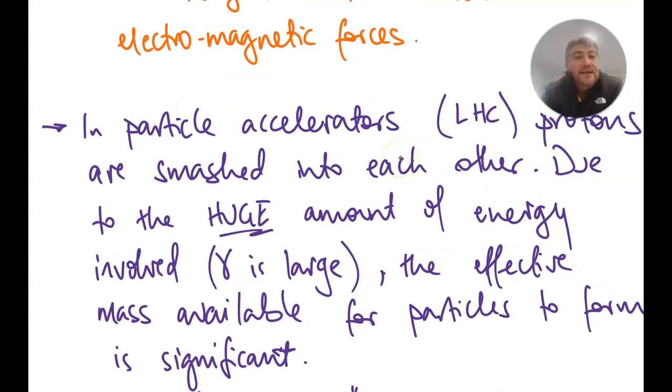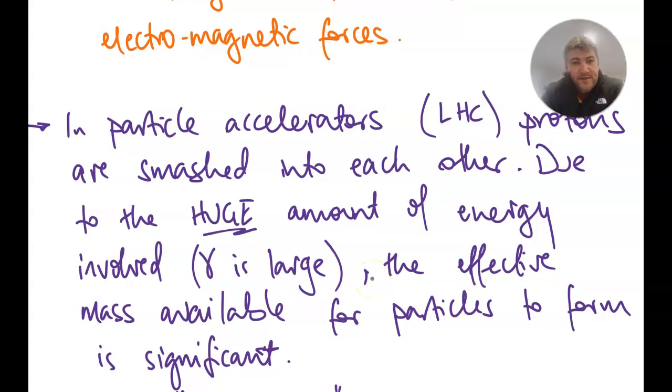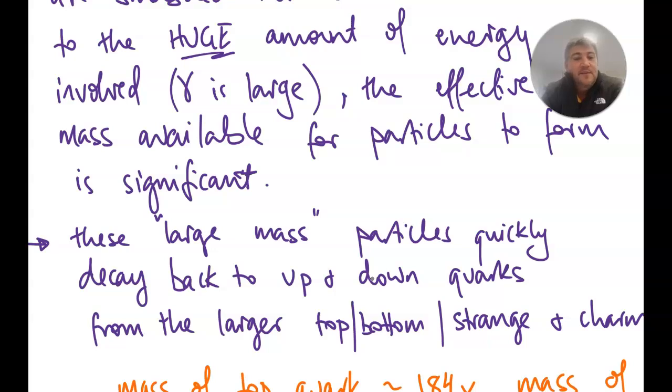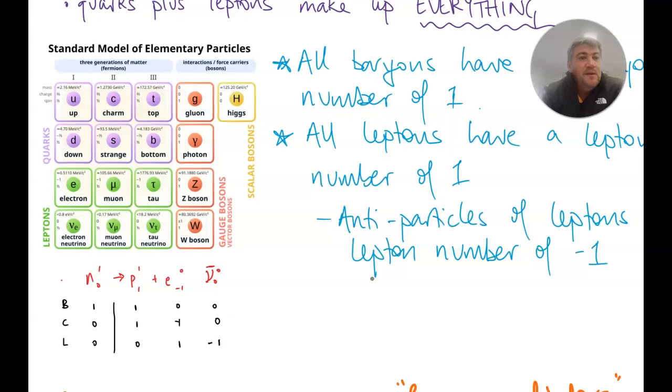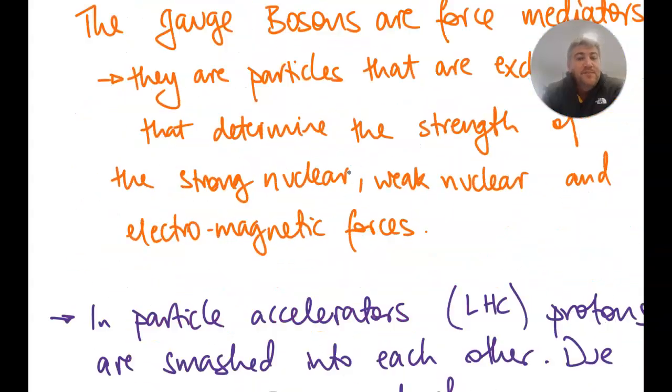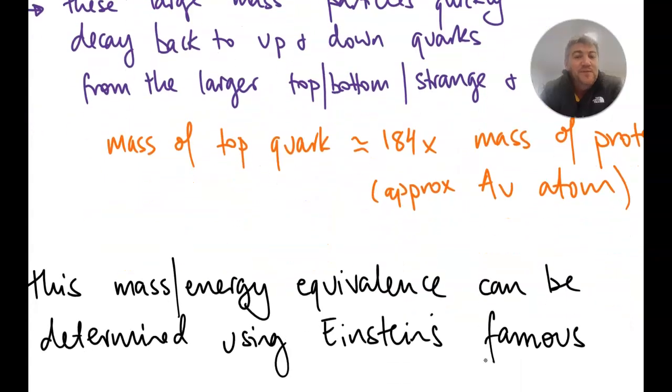When we get particle accelerators like the LHC, we get particles moving very, very close to the speed of light. So gamma is large, so the Lorentz factor is large. So then we've basically got this relativistic mass thing going on. So we get a couple of protons, and their relativistic masses, though, are huge. So these relativistic masses can become the larger of the quarks. So if we go back up here, the larger of the quarks, if you look at this guy here, this top quark, actually has a mass of about 180-something or other times more than a single proton. So that is obviously pretty massive. So it's the mass of the top quark, approximately that of an atom of gold, which is utterly bonkers.